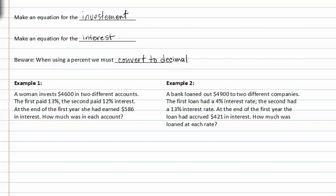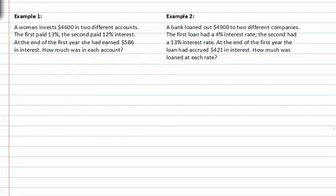In example one, a woman invests $4,600 in two different accounts. So there's an account A and an account B. The first paid 13%, so there's some amount at 13%, and another amount at 12%.